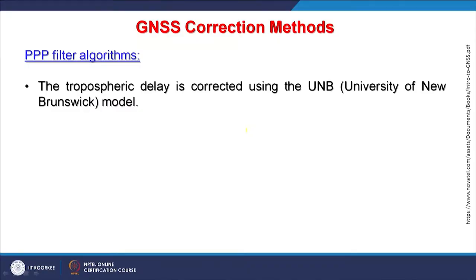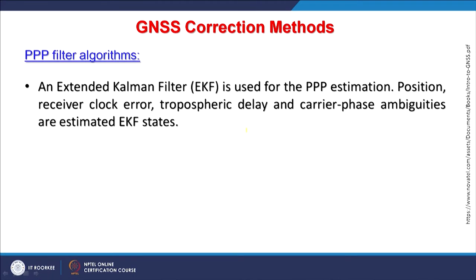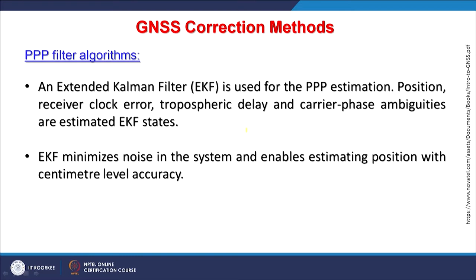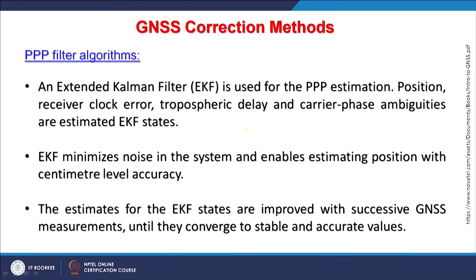Filters can be applied. The Extended Kalman Filter — EKF — is used for PPP estimation of position, receiver clock error, tropospheric delay and carrier phase ambiguities as EKF states. This EKF filter minimizes noise in the system and enables estimating position with centimeter level accuracy. The estimates through EKF states are improved with successive GNSS measurements until they converge to stable and accurate values.